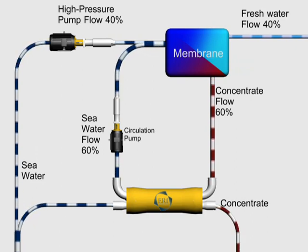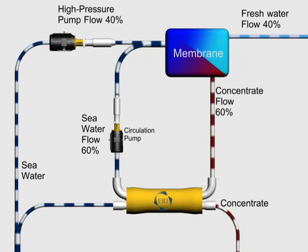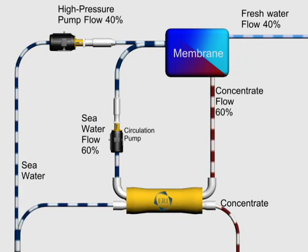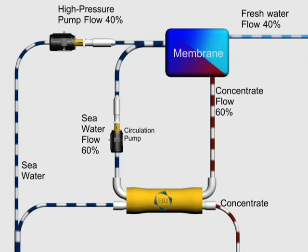Pressurized seawater from the PX circulated with a small booster pump joins the stream from the high pressure pump. The energy consumed by the high pressure pump, which is by far the largest operating expense of an SWRO plant, is reduced by about 60% by the PX.